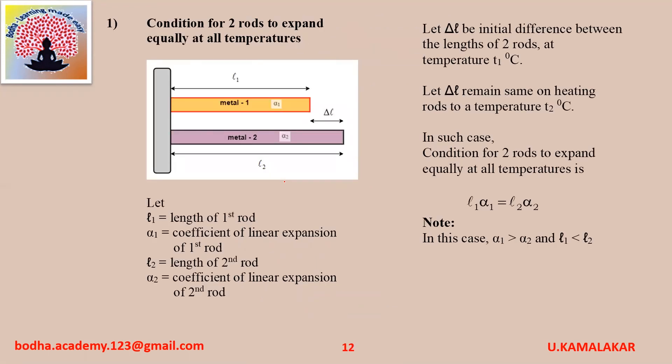Condition for two rods to expand equally at all temperatures: let L1 be length of first rod, alpha1 be its coefficient of linear expansion, L2 be length of second rod, and alpha2 be its coefficient of linear expansion. Let delta L be the initial difference between lengths of the two rods at temperature T1°C and let delta L remain the same on heating to T2°C. The condition for two rods to expand equally at all temperatures is L1 alpha1 equals L2 alpha2. Note: in this case alpha1 is greater than alpha2 and L1 is less than L2.